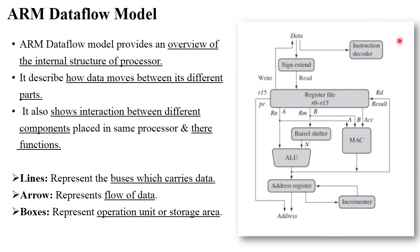In this diagram, this is the ARM data flow model. This model generally provides a complete overview of the internal structure of the processor, and describes how data moves between each and every component and the interactions between them. There are different lines present — these lines indicate the buses. Buses are generally used to carry data or addresses for performing different manipulations. Arrows indicate the flow of data, meaning how data is transferred from one component to another. The different boxes represent operation units or storage areas.